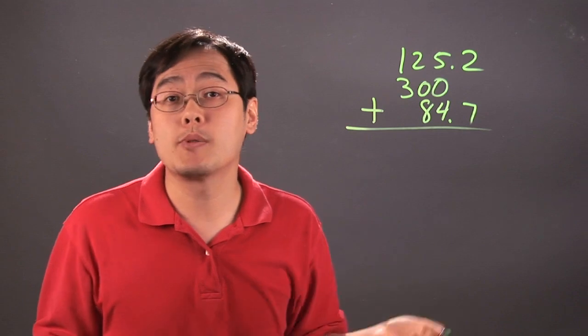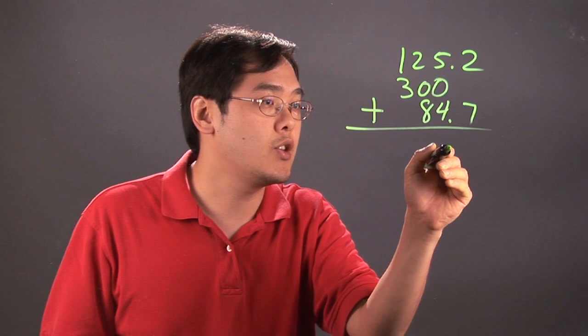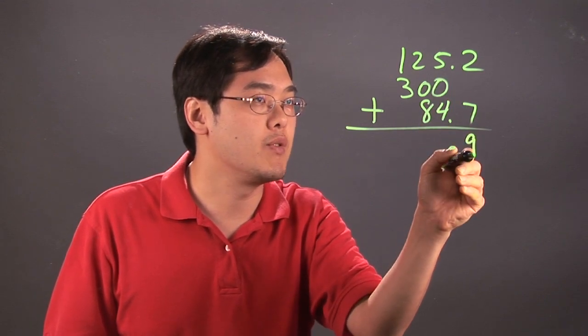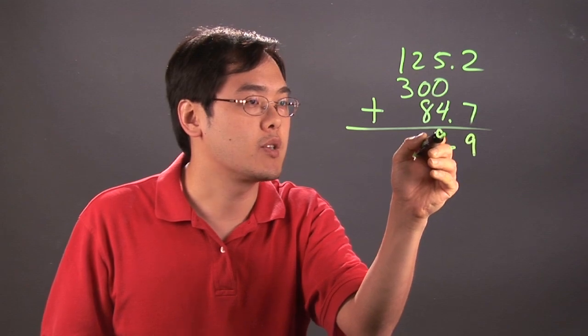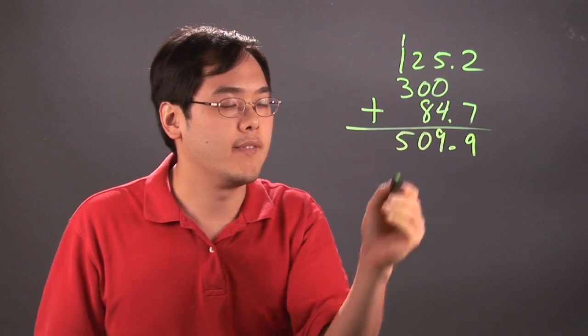So it becomes pretty straightforward after that as long as you keep track of your addition. In this particular case you have a decimal here so you have 2 and 7 that's going to give you 9, 5 and 4 is going to be another 9, 2 plus 0 plus 8 is 10 and so here you have 500.